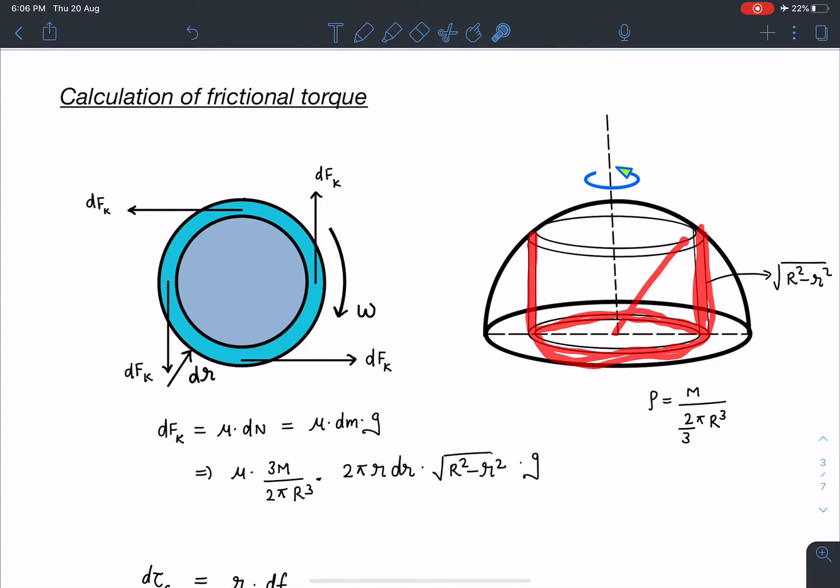Its radius is small r, thickness is dr, and its height is root of capital R square minus small r square. So I can write this friction force as mu times dN which is mu times dm times g, where dm I can find using the density formula. The density is m divided by volume which is 2/3 pi R cubed.